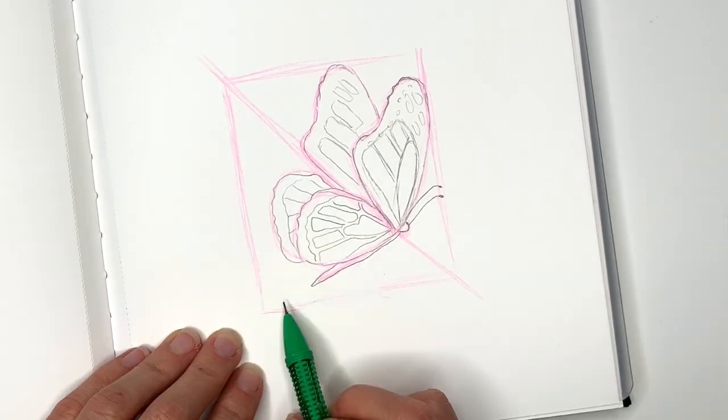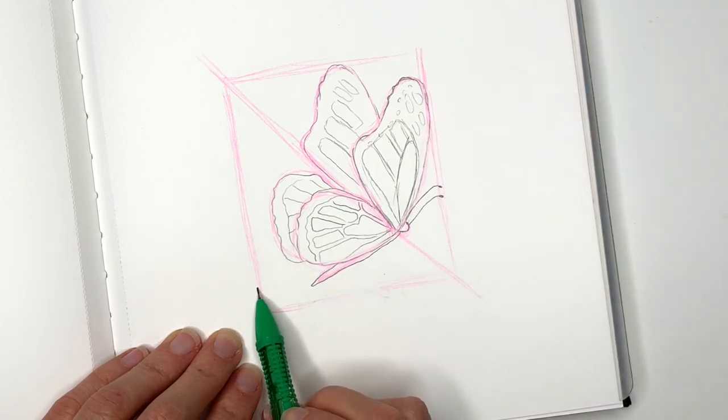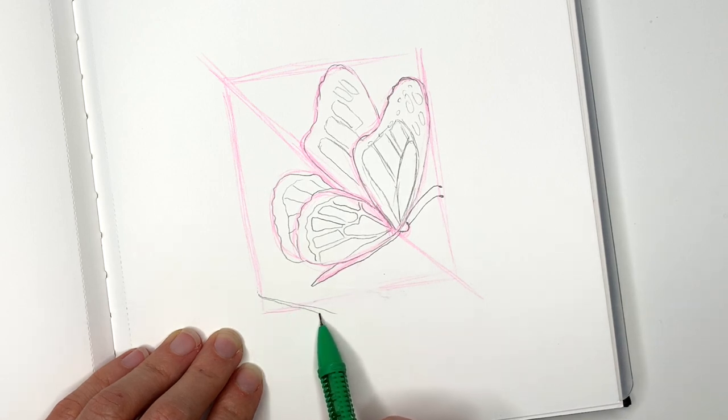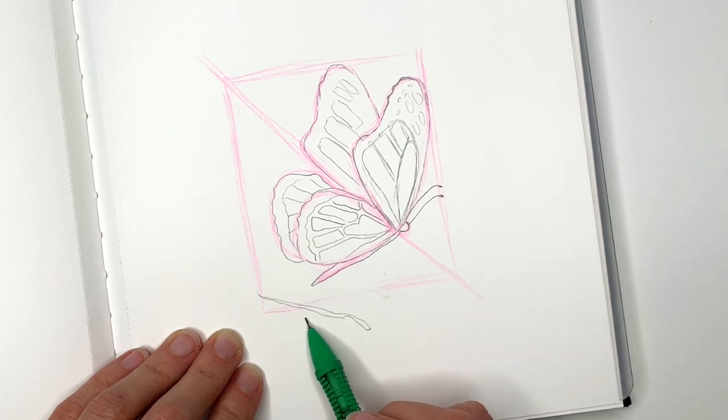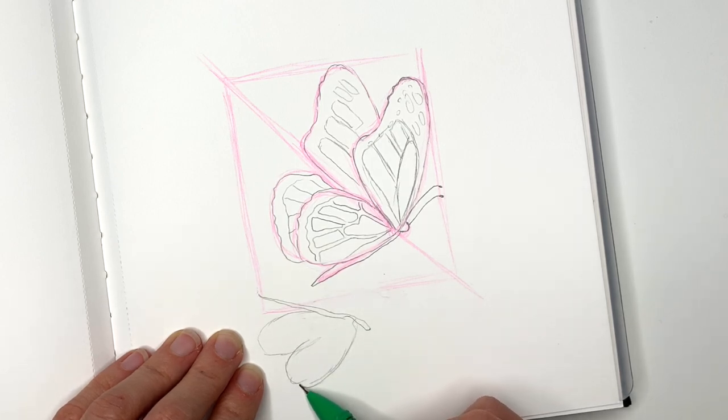We can also draw the shadow so I would begin here maybe with the trunk and then add the wings and make them look almost like a heart, like so.